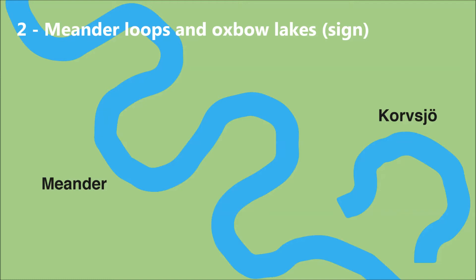The word derives from the Greek name meandros, for the Meandres River in western Turkey. Meandering is the natural course for rivers and streams flowing across almost flat land.